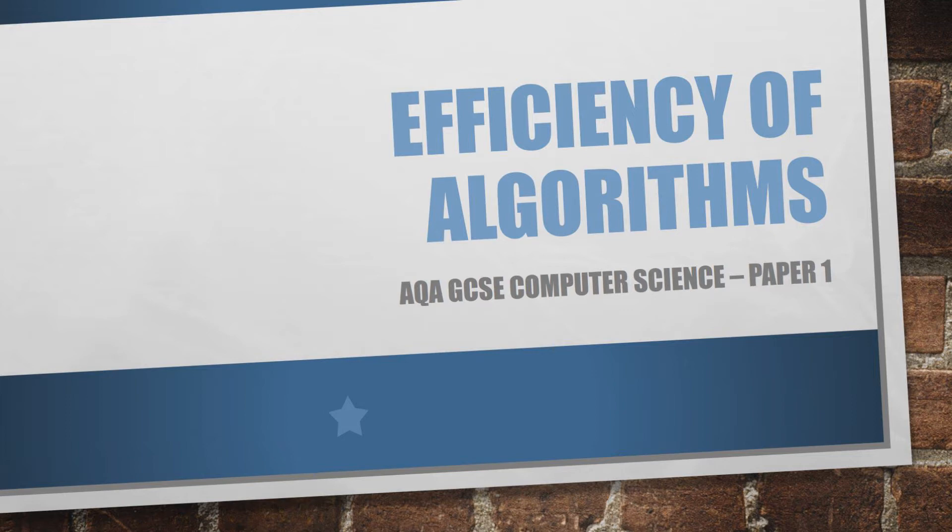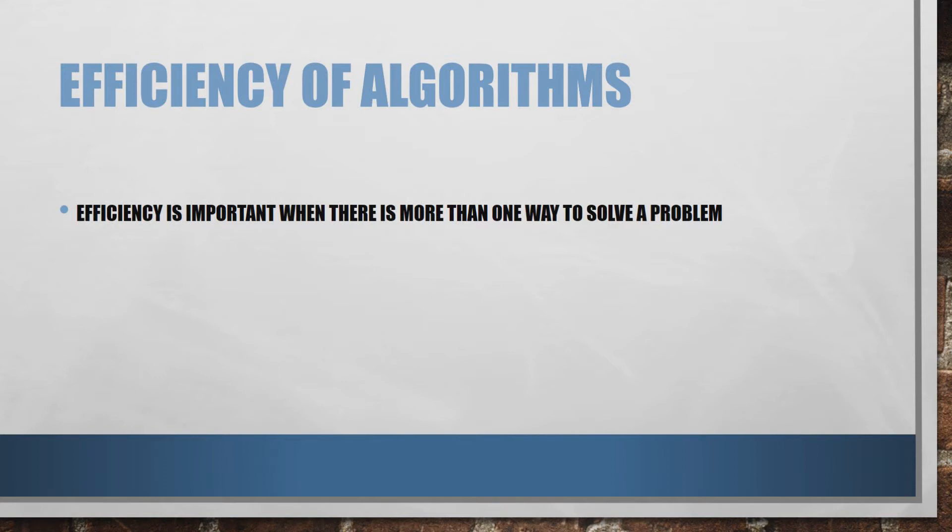We're looking at the efficiency of algorithms today, and specifically the idea that efficiency is important when there's more than one way to solve a problem. Now we know already from an earlier video in this series that there usually is more than one way to solve a problem.